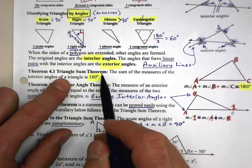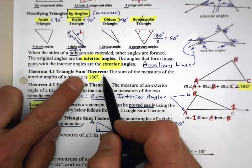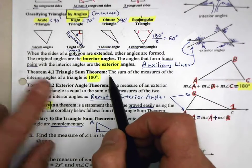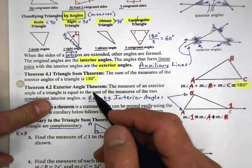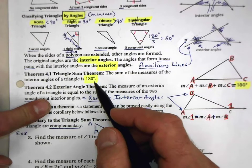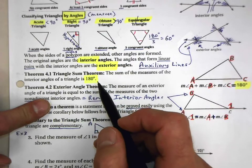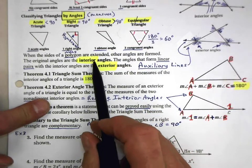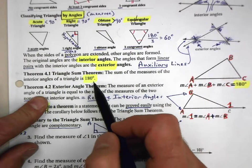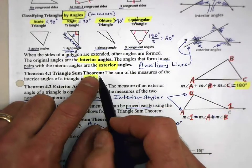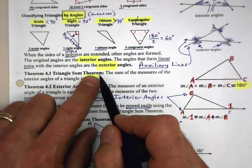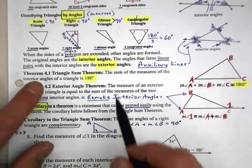Triangle Sum Theorem. A theorem is something that we can prove — it's not an axiom or postulate, which is something accepted to be true without proof. Something proven to be true is a theorem. We'll prove it down the road: the sum of the measures of the interior angles of a triangle is 180 degrees.